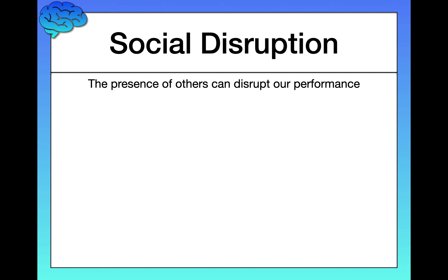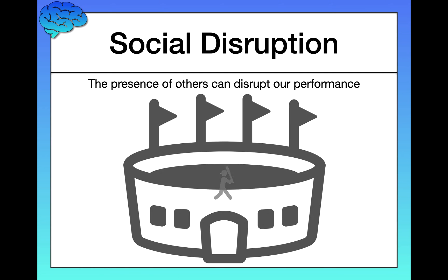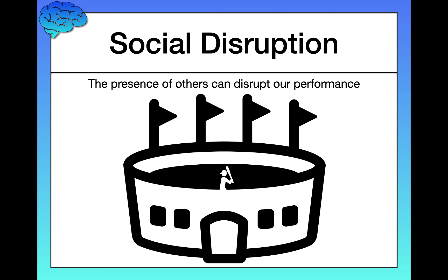Social disruption can also occur — the presence of others can disrupt our performance in certain situations. Social facilitation tends to occur for easier tasks, whereas social disruption can occur for more difficult tasks or in situations where the stakes are very high. For example, a baseball player at the end of a very important game might strike out if being watched by many people. In this case, the social pressure might cause the player to choke. This is social disruption.